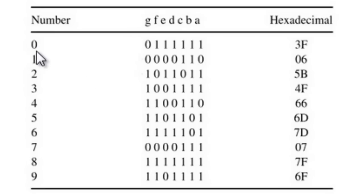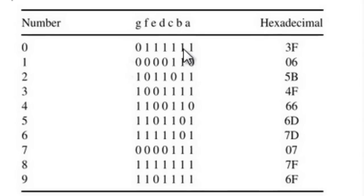To display zero, switch on segments A, B, C, D, E, and F — only segment G should be off. The binary representation is 1111110, which is 0x3F in hexadecimal.